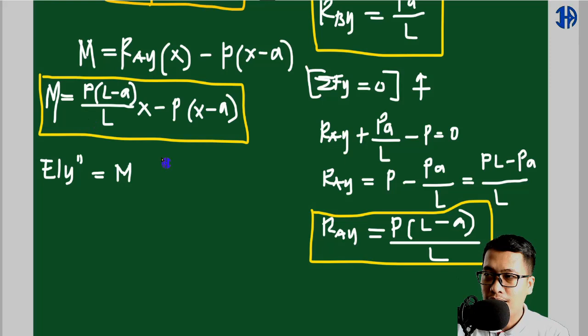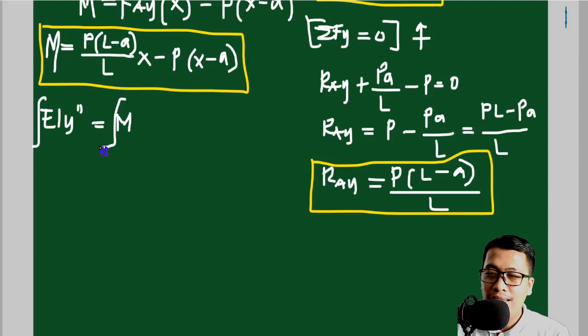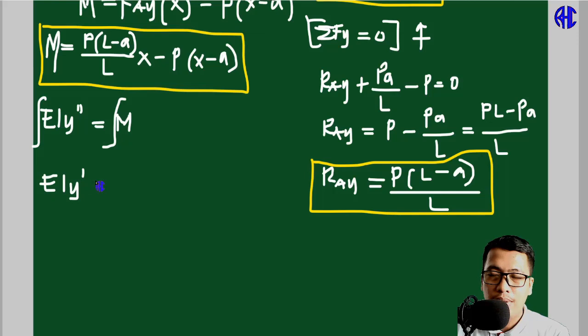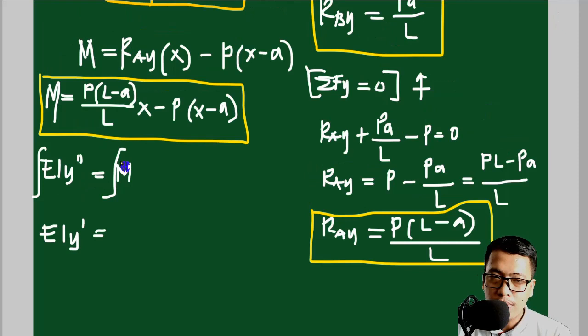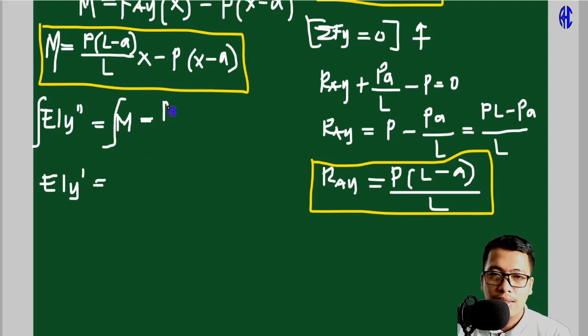We need to integrate the EI slope equation to get the EI deflection. Note an important condition: the term (x minus a) must always be greater than zero. Once it becomes less than or equal to zero, it is automatically set to zero and neglected. Do not expand that term during integration, as it will cause errors.